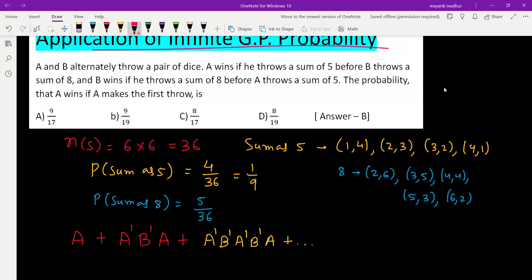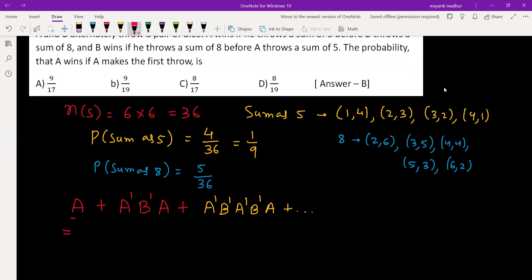A will win when he gets sum as 5, probability 1/9. Plus, A is not winning so probability is 8/9. B will win when he gets sum as 8 but that is not happening, so 1 minus 5/36 which is 31/36. But at the end A wins, so it has probability 1/9.